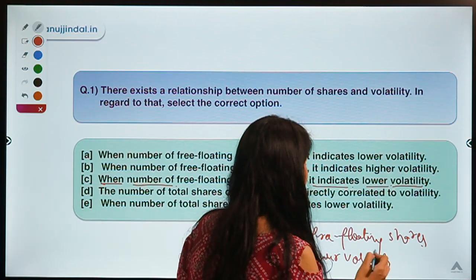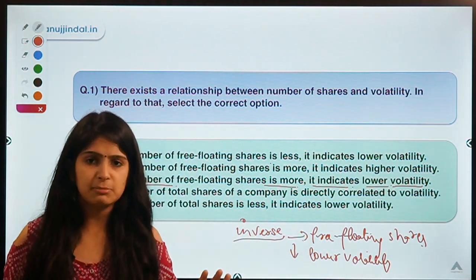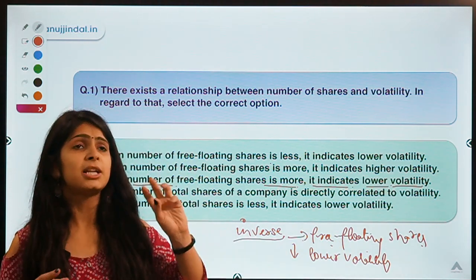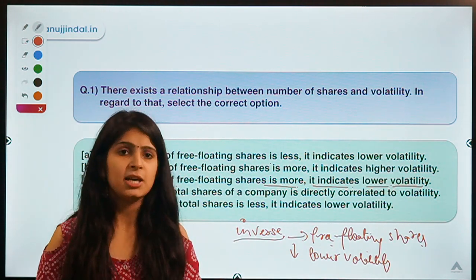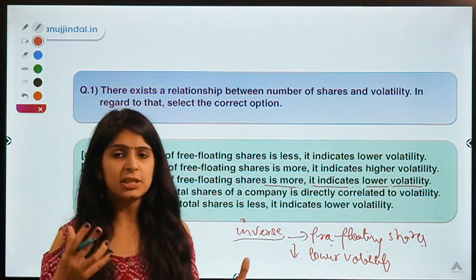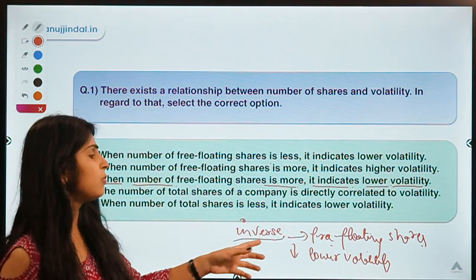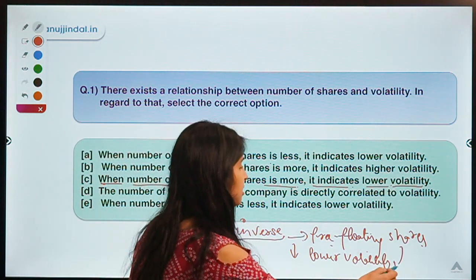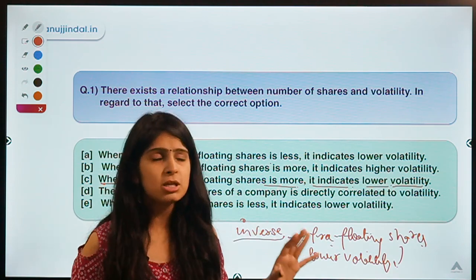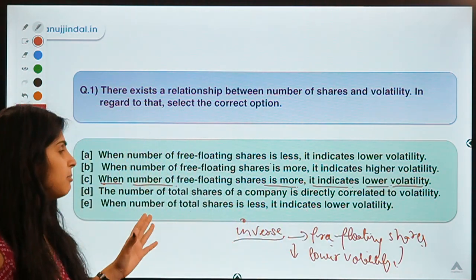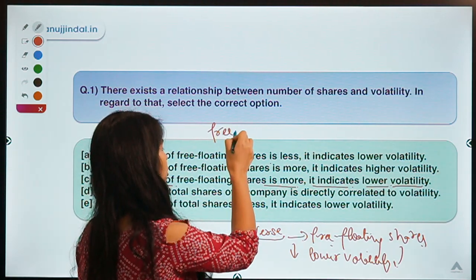The more the number of free-floating shares, the lower the volatility — meaning the movement in the prices of shares. Free-floating shares are those shares which are available for trading in the market. These are the shares which can lead to price fluctuations when investors buy or sell them. Volatility refers to how much the price of a share changes — whether it is going up or going down.